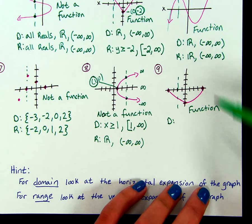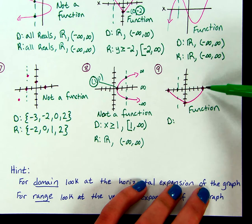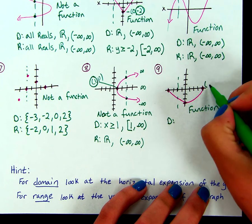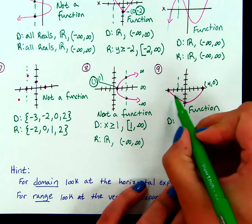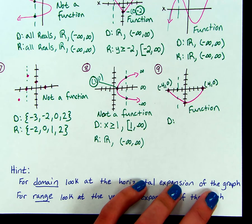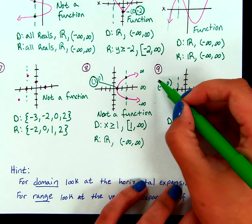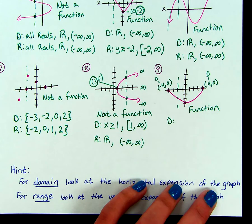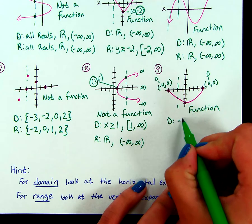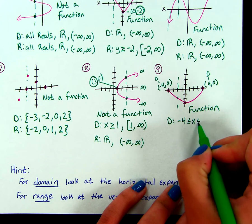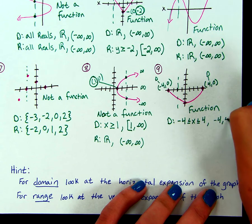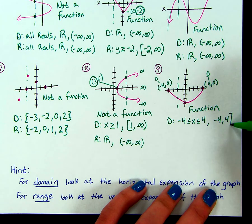That means we're going to have a compound inequality — an AND statement. All of my x's in this graph exist between these two points. On this side the point is at 4, 0, and on the other side it's at negative 4, 0. Since we're dealing with domain, we want the x values. So all of my x's are between negative 4 and 4: negative 4 less than or equal to x, less than or equal to positive 4. In interval notation, the smallest number is negative 4 and the biggest is positive 4, and both are included, so we have brackets.